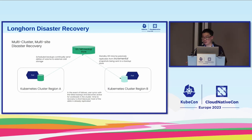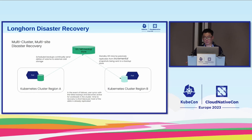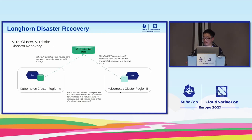Longhorn supports disaster recovery as an out-of-cluster feature. You can back up a volume incrementally to a remote backup target from a source cluster while data is actively being written, and incrementally restore to a standby destination cluster. When you activate the DR volume, it starts serving your workload. This provides an important foundation for cross-cluster volume disaster recovery.